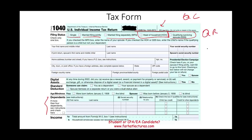Notice here on the tax form: after we list the dependent's name, their social security number, and relationship to you, we need to see if this dependent qualifies you for the child tax credit or the credit for other dependents, which is the qualifying relative. You want the qualifying child because there's more money there. So what we need to learn is how to make that determination.